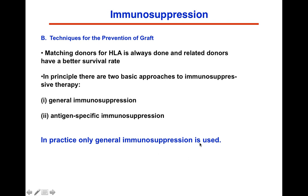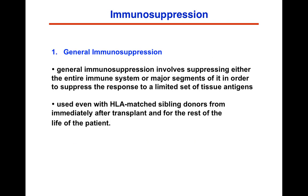In practice, only general immunosuppression is used. We can't suppress an immune response to just a particular antigen yet. General immunosuppression involves suppressing either the entire immune system or major segments of it — suppressing T-cell or B-cell reactions — but not just the ones that interact with that particular transplanted organ.